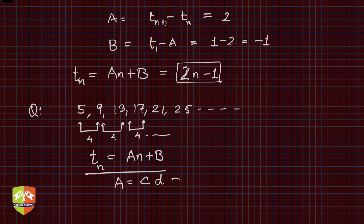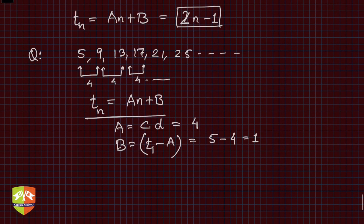A equals the common difference, which in this case is 4. B is the first term minus the common difference, which is 5 - 4 = 1. So now if we write the formula, tn = 4n + 1.